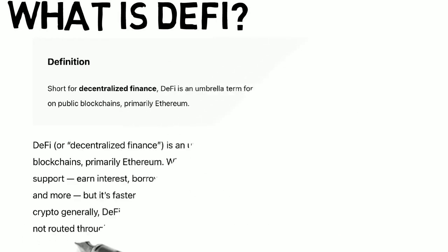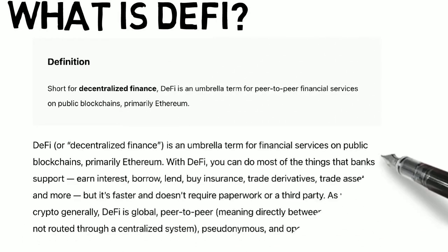Now you're going to find that there are also a lot of other blockchains providing DeFi. You get most of the banking services that you would get in a traditional bank: earning interest, borrowing, lending, buying insurance, trading derivatives, trading assets, and more. But it's faster, there's no paperwork or third party. You can do it directly yourself, and it is basically permissionless, meaning that you don't need to go and get somebody else's permission to do it, as with open blockchains.